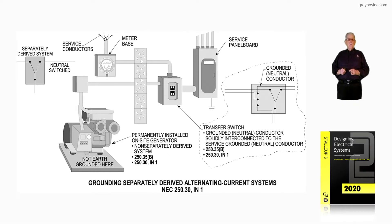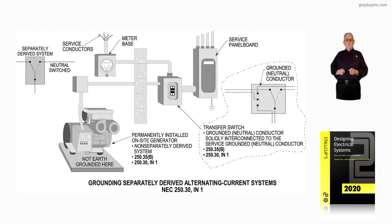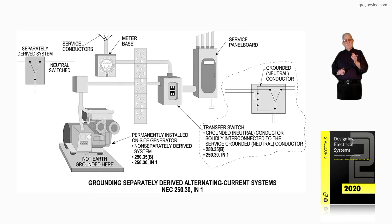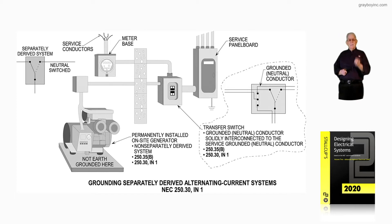This illustration further talks about grounding separately derived alternating current systems in accordance with NEC 250.30, and we're going to focus on the informational note listed there. Many times, even today, there are two questions I get quite often: how do you classify a generator as a separately derived system or non-separately derived system, and just exactly how do you classify the generator?